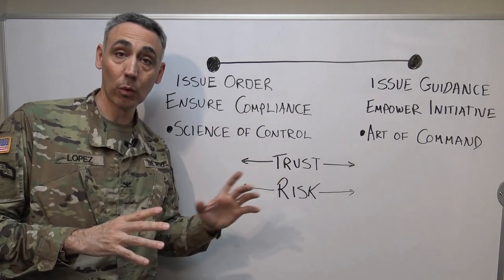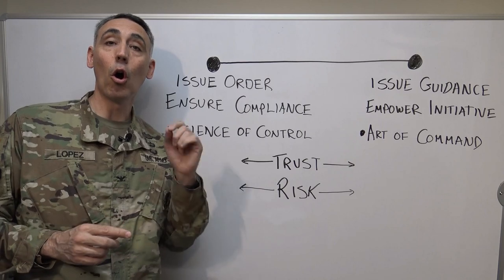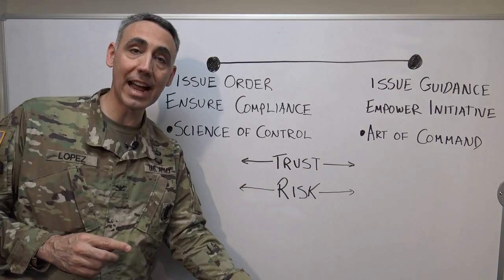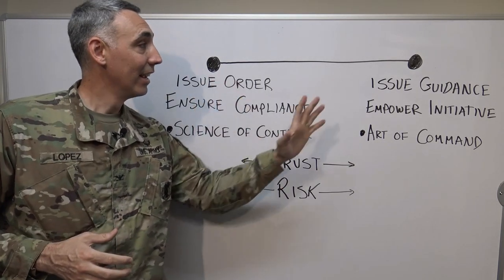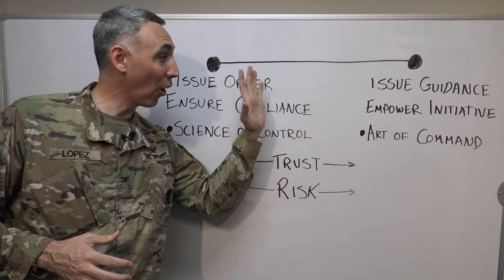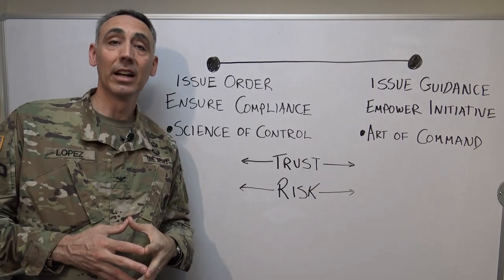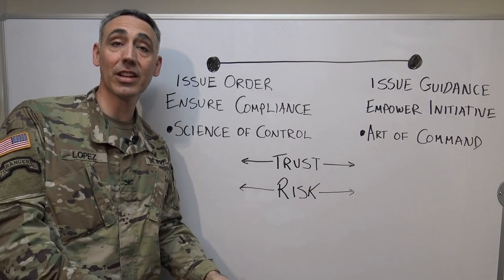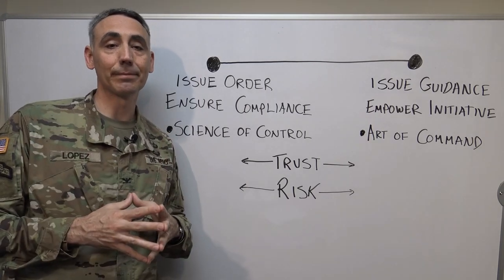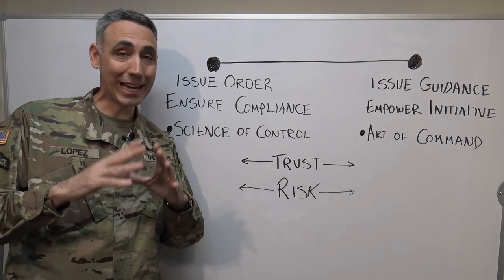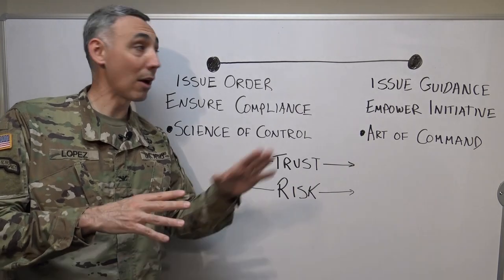Here are seven ways to make this come to life, whether in garrison, the field, or deployed. First, always seek to push authority down and pull risk up. No matter the situation, we always want to be moving our organizations toward the empowerment side of the spectrum — give them authority to make decisions at the lowest level, and we take the risk as the leader.